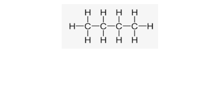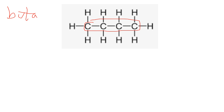We're going to look at molecules where the chain is not a straight line. We'll start with a straight-line example though. This is butane — you can see there are four carbons in a row. Four is 'but', there are no double bonds, so we end it in A-N-E: butane.